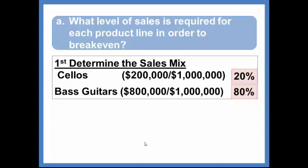On the other hand, bass guitars comprised $800,000 of the $1,000,000. That's 80% of sales. So now that we've computed the sales mix, we can decide or determine how much of the breakeven sales need to come from cellos and how much need to come from bass guitars.